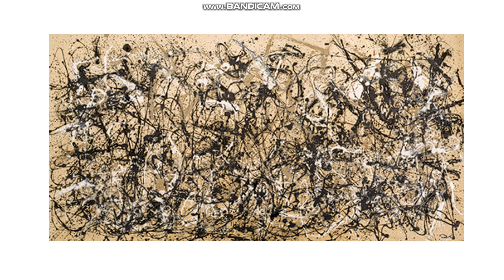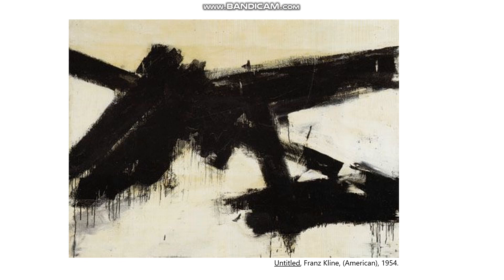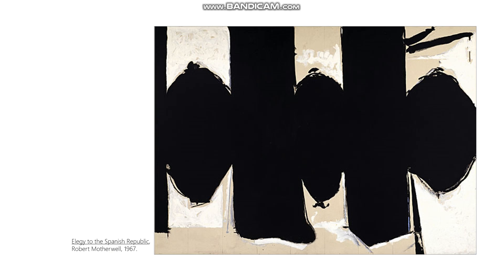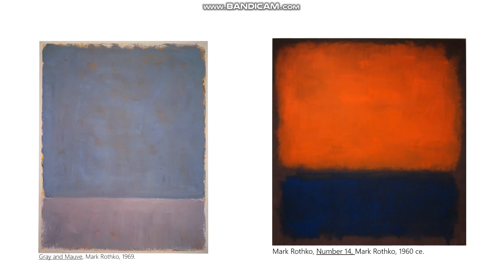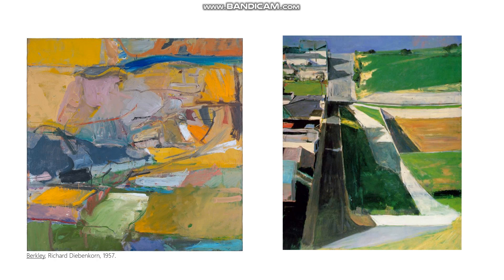That leads to some of the more famous examples of abstract expressionism, like Jackson Pollock — this is Autumn Field — and classic abstract expressionist statements like this Franz Kline, and Robert Motherwell, and Mark Rothko. We've seen the orange and yellow Rothko multiple times in this course.